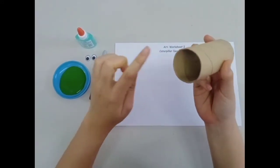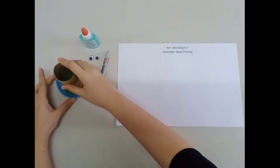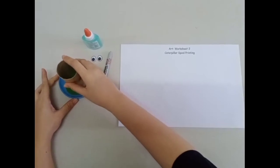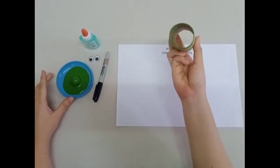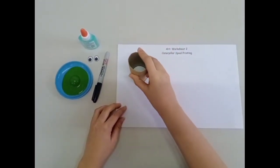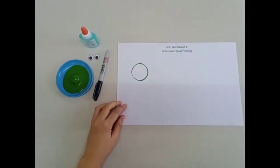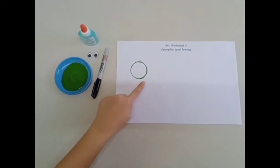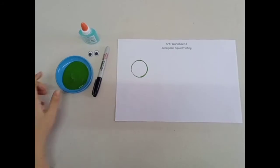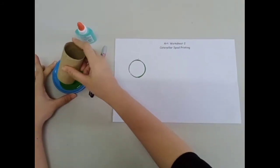Dip the mouth of the spool into the green paint like this. Then print the spool on the paper. I made a nice circle. Now let's make more circles to form a caterpillar.